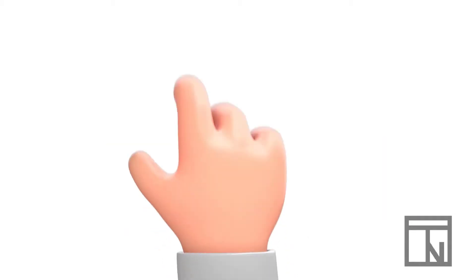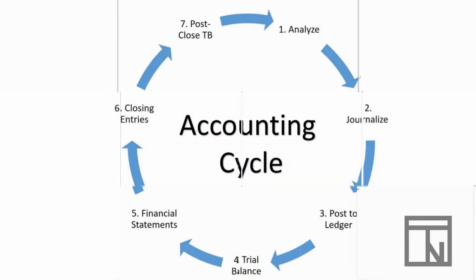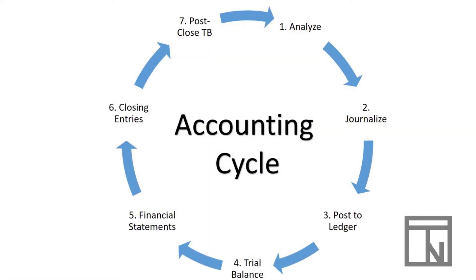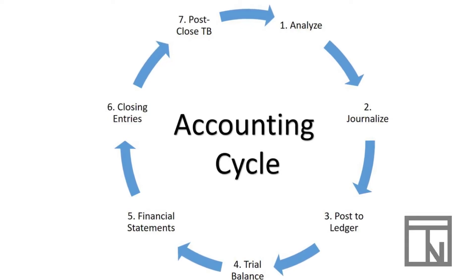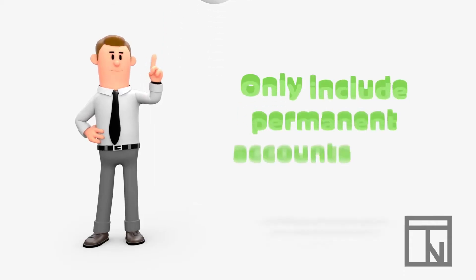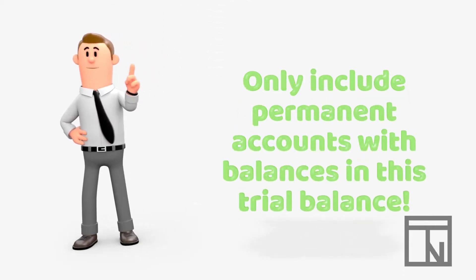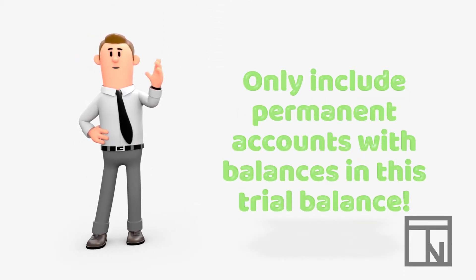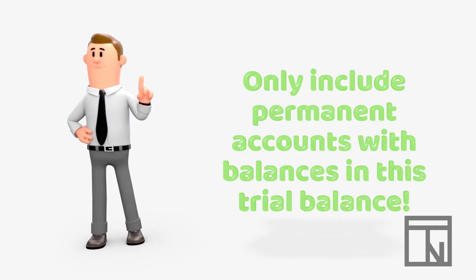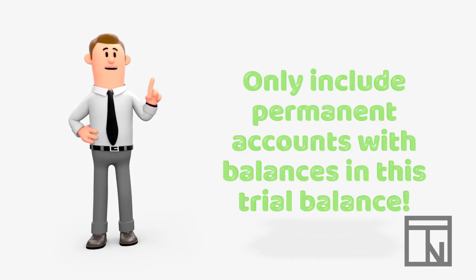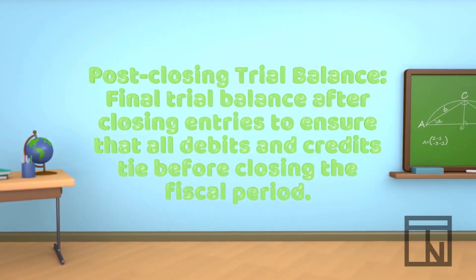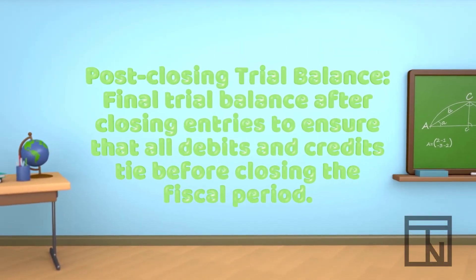Once the closing entries are completed, the final step in the accounting cycle is to do one last trial balance to ensure no mistakes were made in the closing process. Since all temporary accounts should be empty, only the permanent accounts with balances are included. This trial balance, created after the closing entries are completed, is known as a post-closing trial balance.